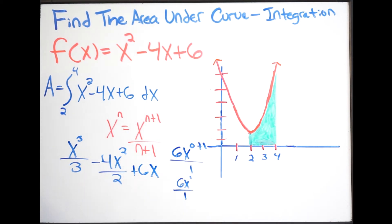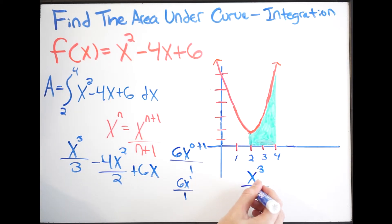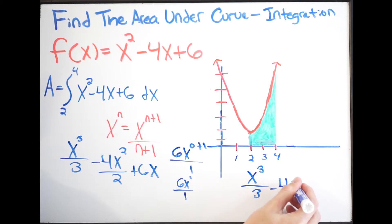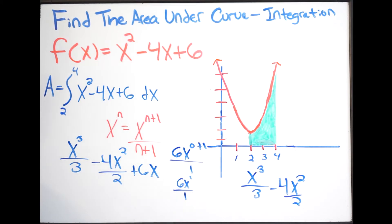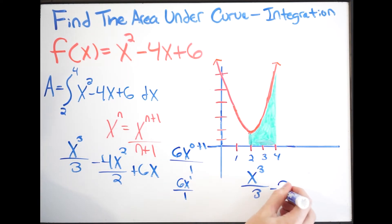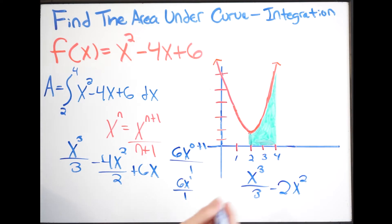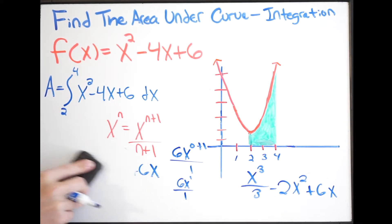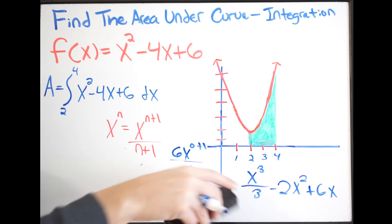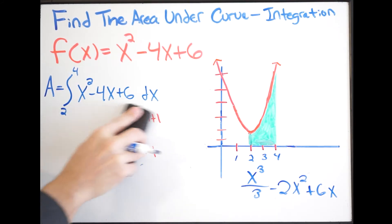Let me write that out. We have x to the third all over 3, minus 4x squared all over 2. We can reduce that middle term: 4 over 2 gives us negative 2x squared. So rewriting, the anti-derivative is x cubed over 3 minus 2x squared plus 6x.